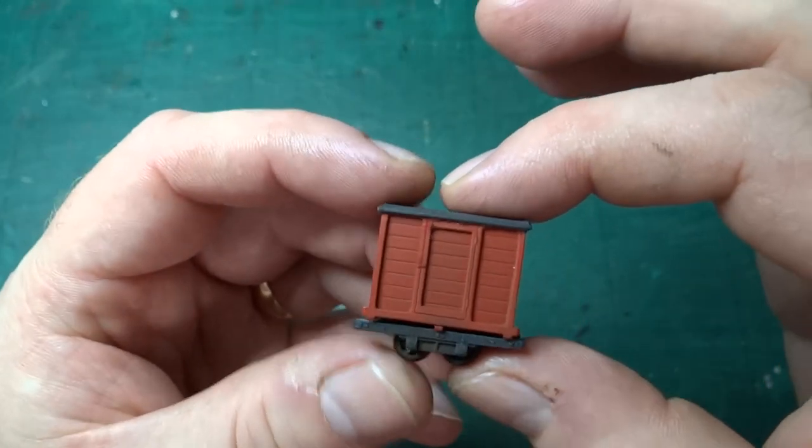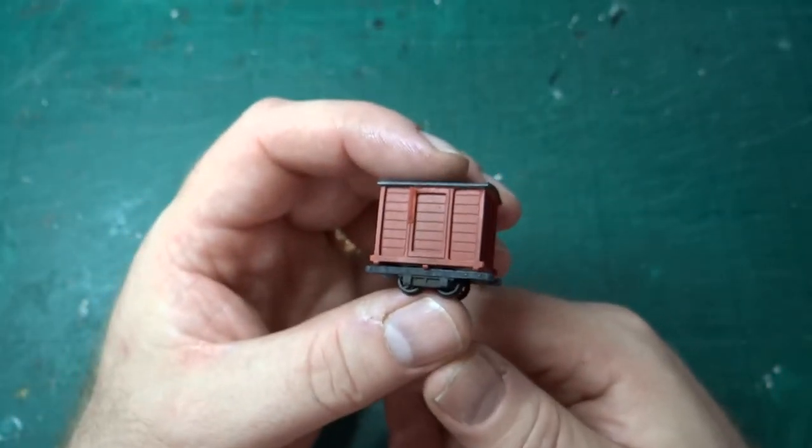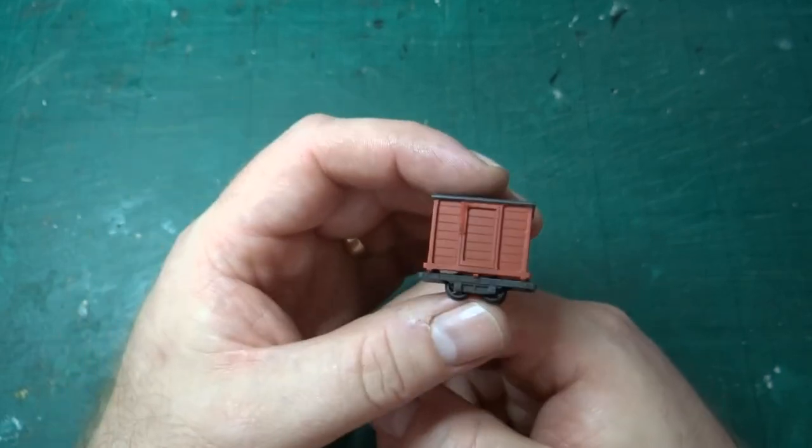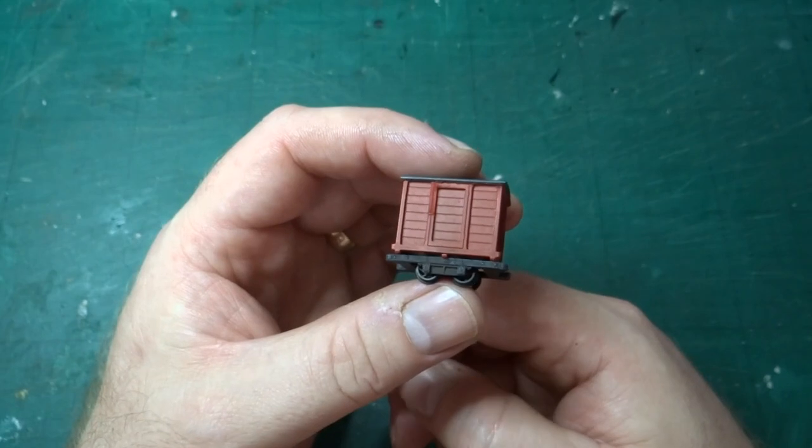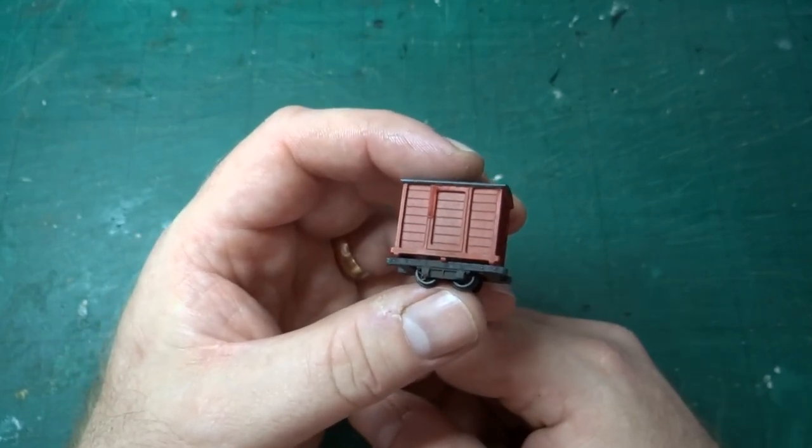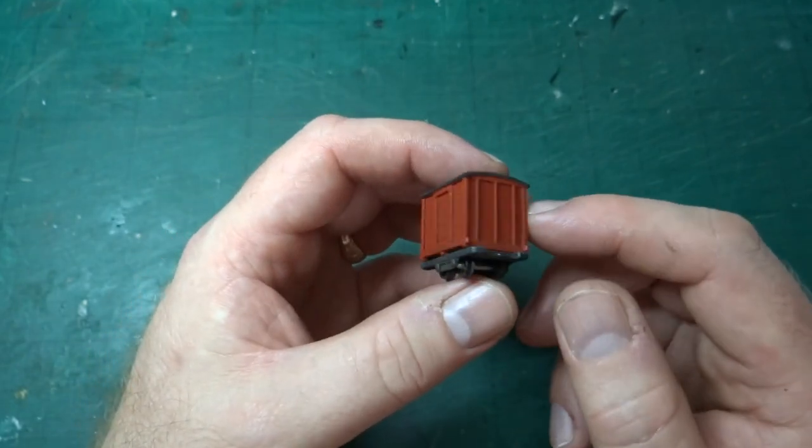One of the things we talked about in the video looking at the Foley oil refinery flat wagon was that you have to be careful with orientation and the way you print models, especially through Shapeways, if you want to make sure you maintain details like wooden planks and things.